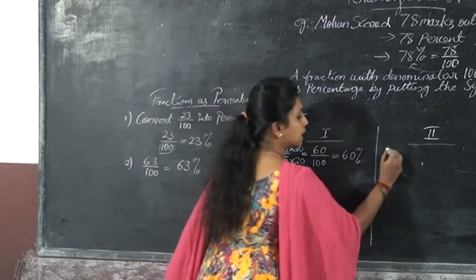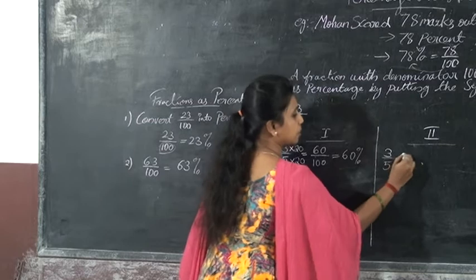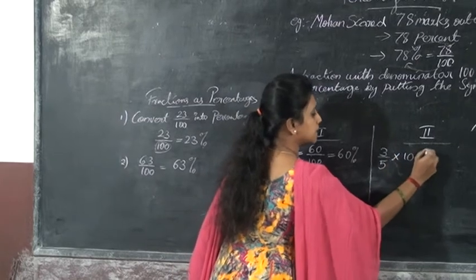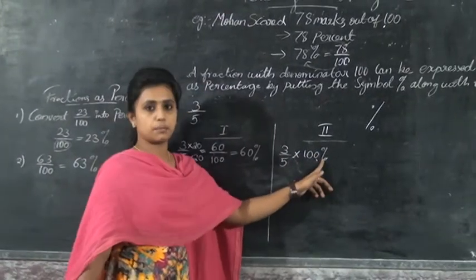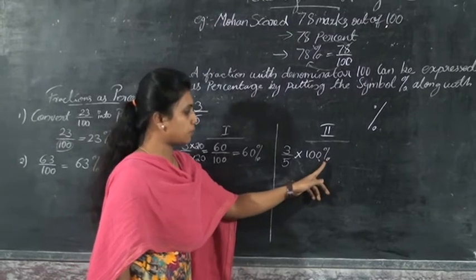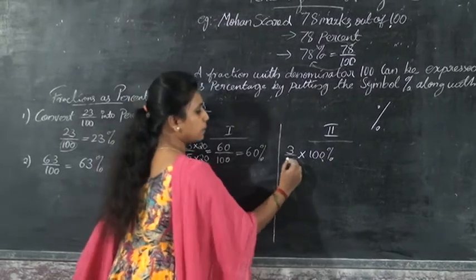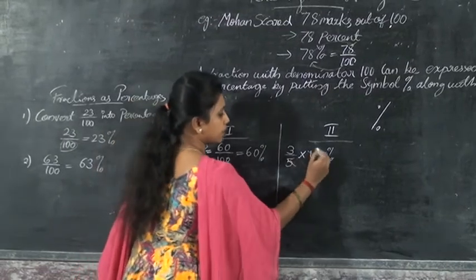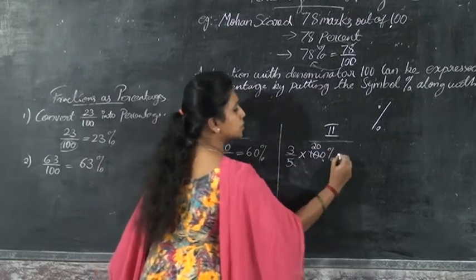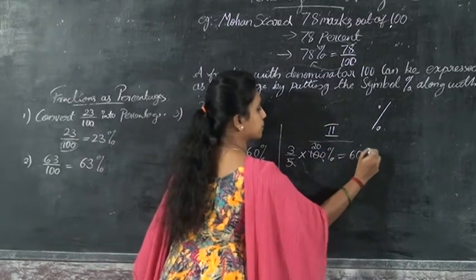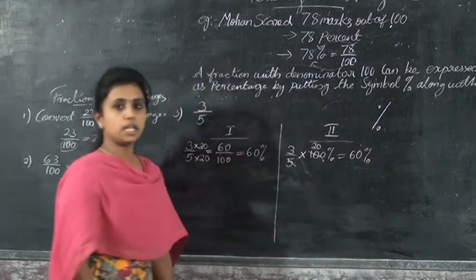The second method is: take the fraction 3 by 5 and multiply it by 100 percent. 100 divided by 5 is 20, and 3 into 20 is 60. So the answer is 60 percent.